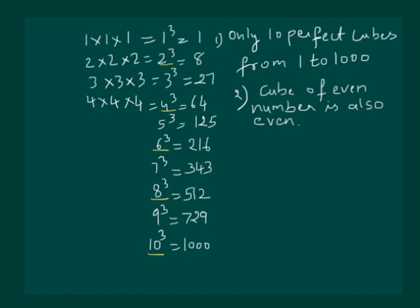Now let us look at the odd numbers. 1³ = 1, 3³ = 27, 5³. In general, we can say that cube of odd number is also odd.